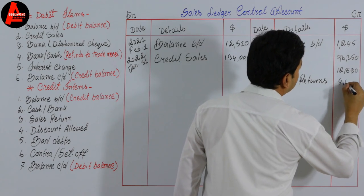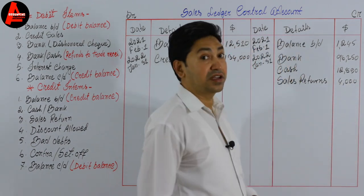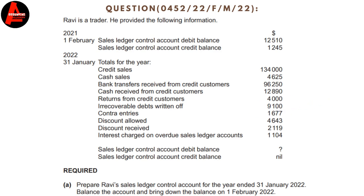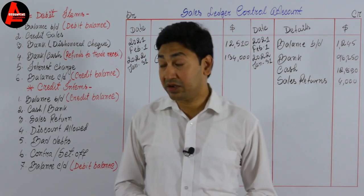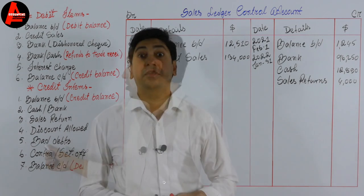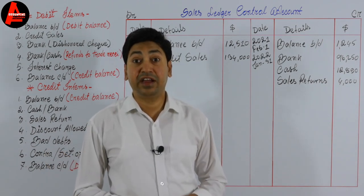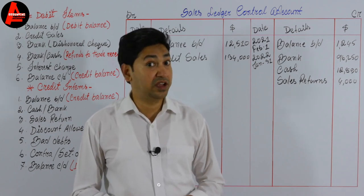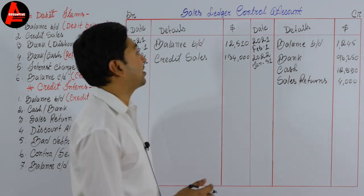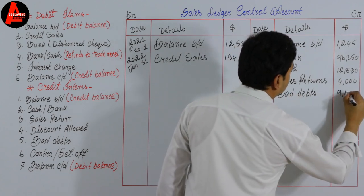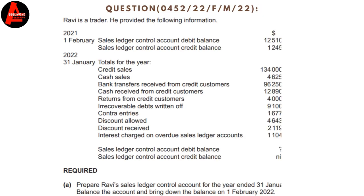The next item is irrecoverable debts of $9,100. This is a bad debt and will be written on the credit side. Note that provision for doubtful debts is a separate item and will never be included here — don't be confused. So we write bad debts: $9,100.